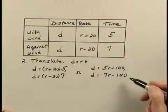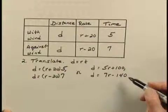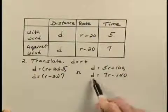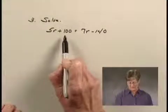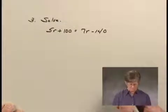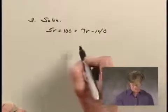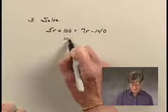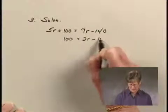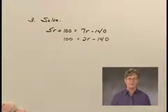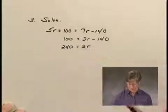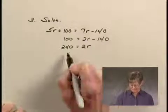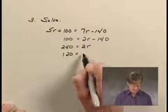We'll solve this system using substitution. Substituting 5R plus 100 for D in the second equation gives 5R plus 100 equals 7R minus 140. Subtracting 5R from both sides: 100 equals 2R minus 140. Adding 140 to both sides: 240 equals 2R. Dividing both sides by 2: R equals 120.